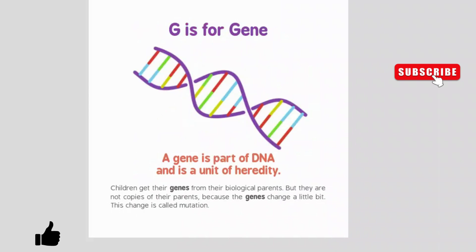G is for gene. A gene is a part of DNA and is a unit of heredity. Children get their genes from their biological parents, but they are not copies of their parents because the genes change a little bit. This change is called mutation.